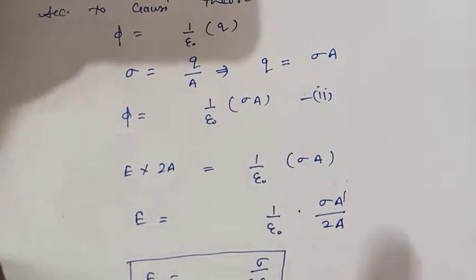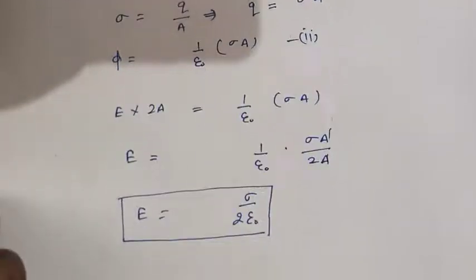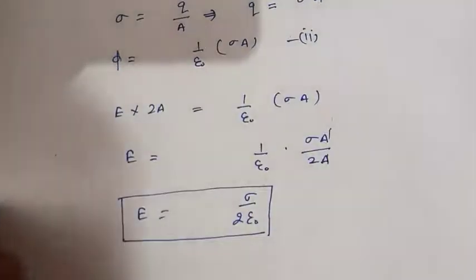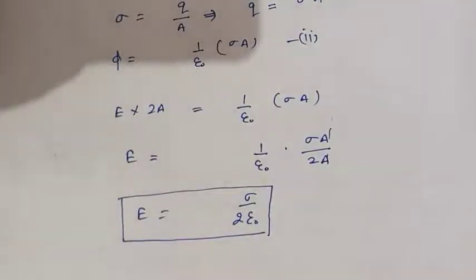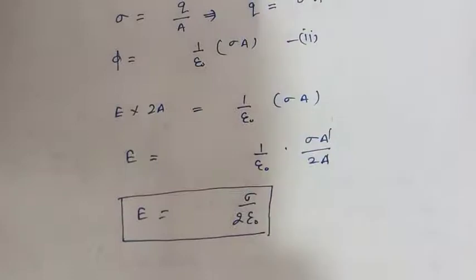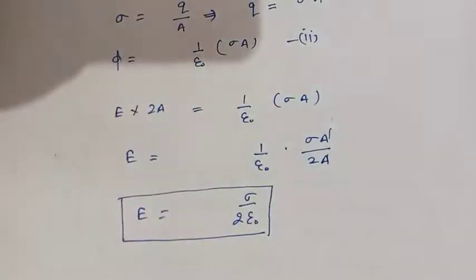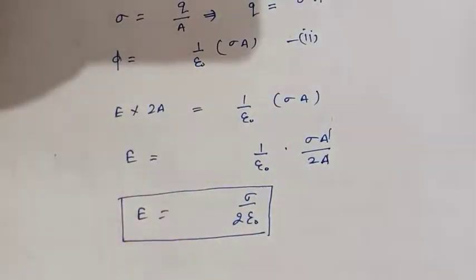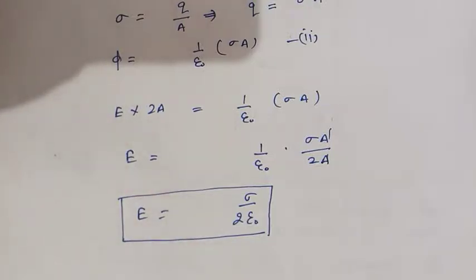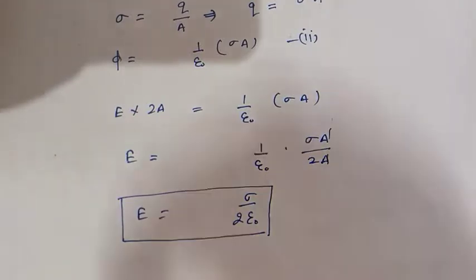So this is the electric field due to an infinitely plane sheet of charge: E equals sigma upon 2 epsilon-zero. In the next video we will start our next chapter on capacitors. Thank you for watching. If you have not subscribed to the channel, you can subscribe to get our latest videos. Thank you.